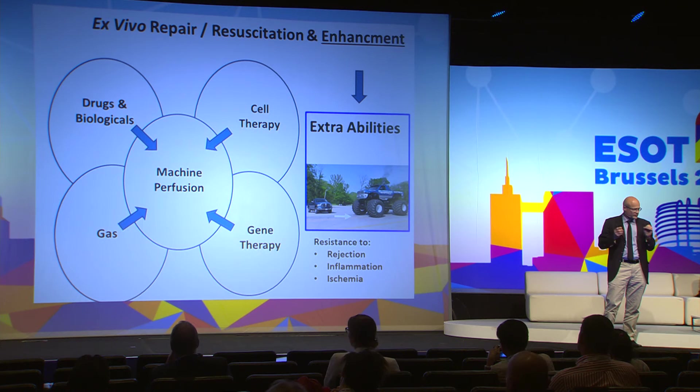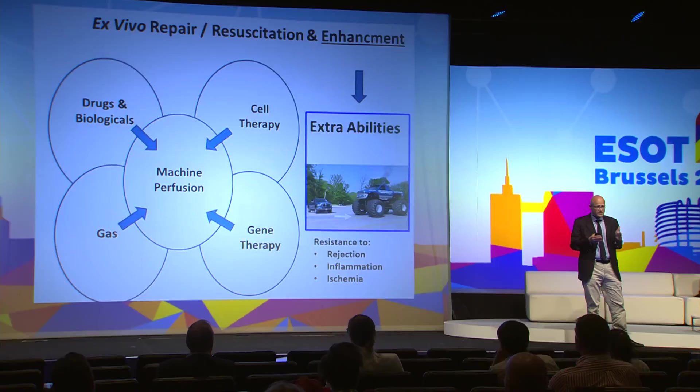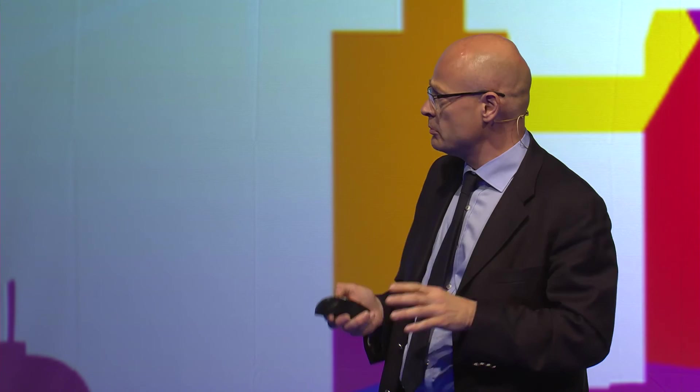We are now seeing that machine perfusion is going to be used as a platform to directly target the organ with cells, genes, gas, drugs, and biologicals — not just to repair but to enhance. This is not science fiction; it's reality. It's going to be possible to provide an organ with extra abilities so it can better resist infection, rejection, inflammation, and ischemia. Drugs and biologicals are already daily practice, but in the future we'll be able to remodel the vessel wall.